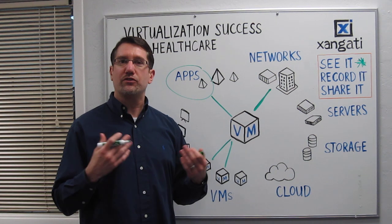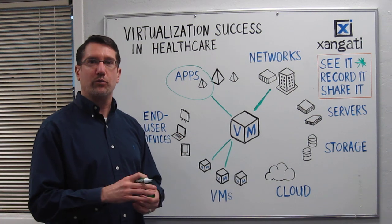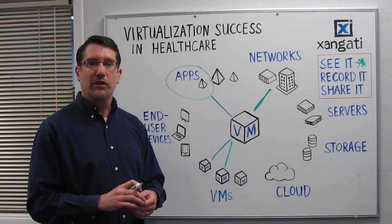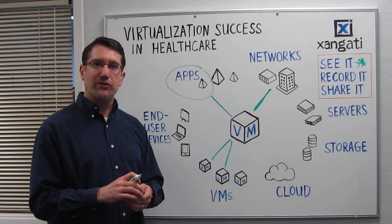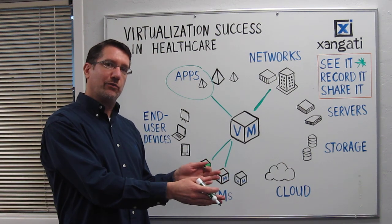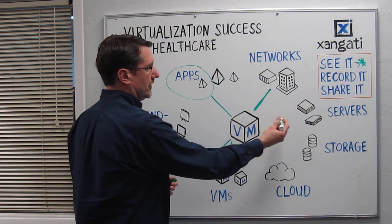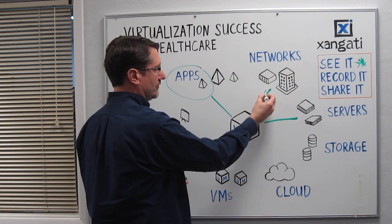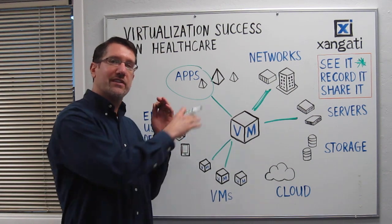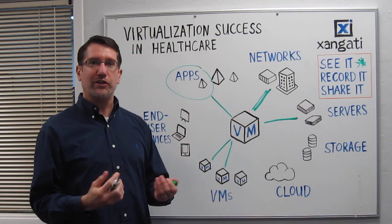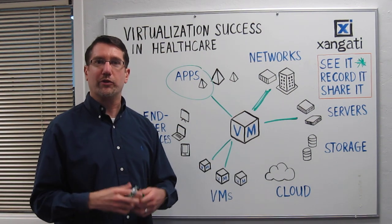Another example: workstations on wheels. An organization was looking at buying more workstations on wheels because doctors said they were never available. The problem was that they had implemented virtualization and changed some configurations, so the majority of these workstation carts could no longer talk to the backend servers and applications they needed. It was a server and network problem coupled with a virtualization configuration issue. By being able to see that the problem was a configuration issue, virtualization was no longer being blamed, and they had another success story.